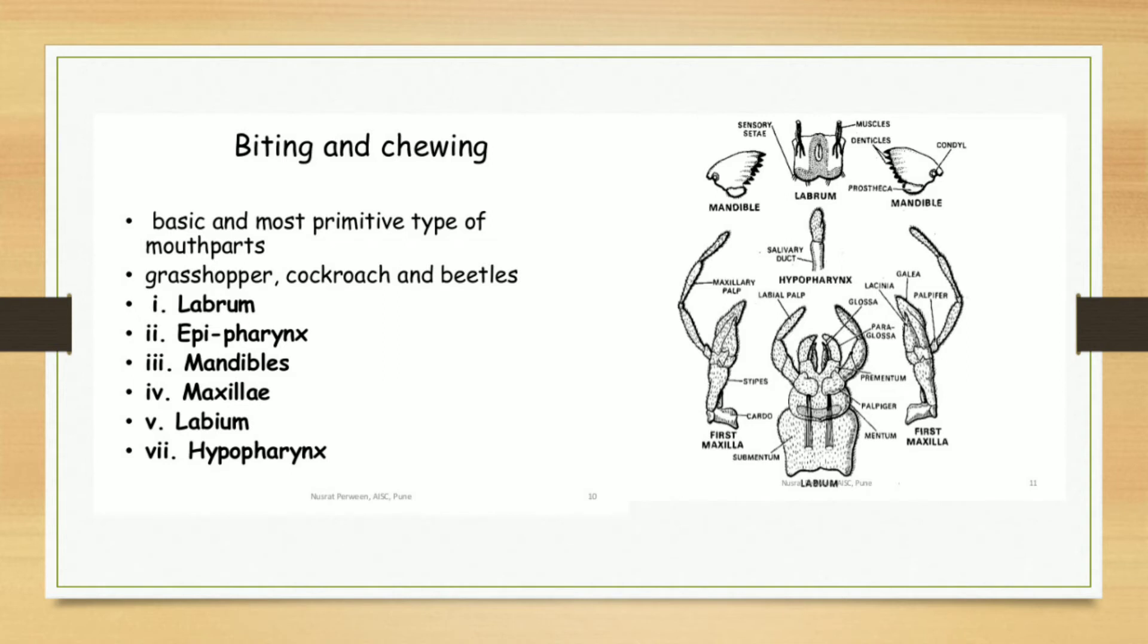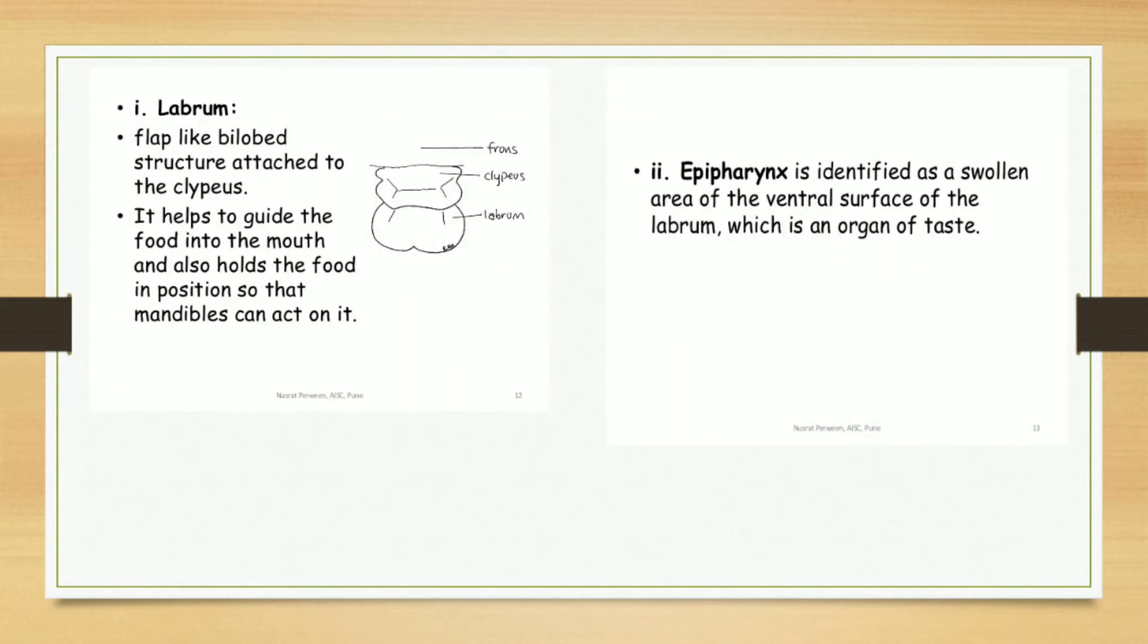These mouthparts consist of labrum, epipharynx, mandibles, maxilla, labium, and hypopharynx. First is the labrum. Labrum is a flap-like bilobed structure attached to the clypeus. It helps to guide the food into the mouth and also holds the food in position so that mandibles can act on it. See the picture of labrum—it contains frons, clypeus, and labrum. Epipharynx is identified as a swollen area of ventral surface of the labrum, which is an organ of taste.